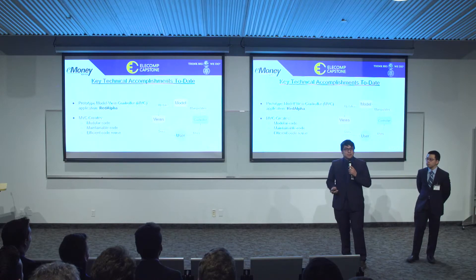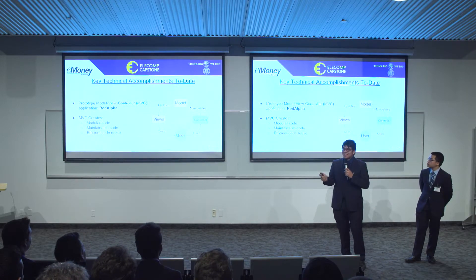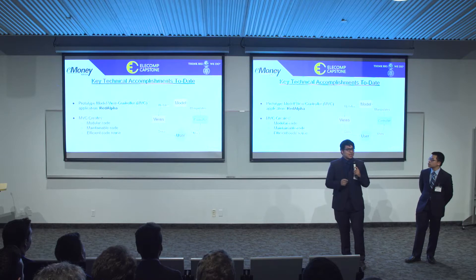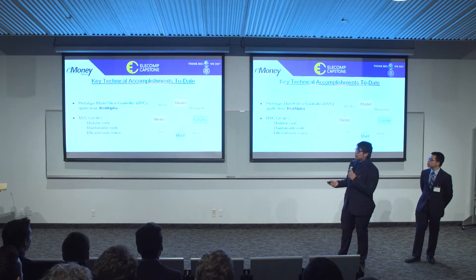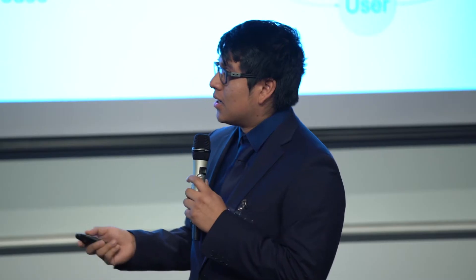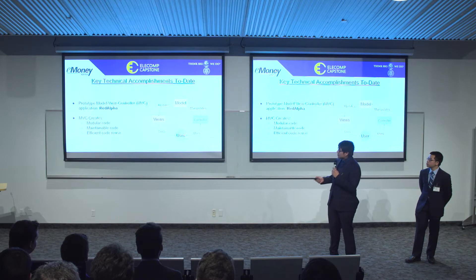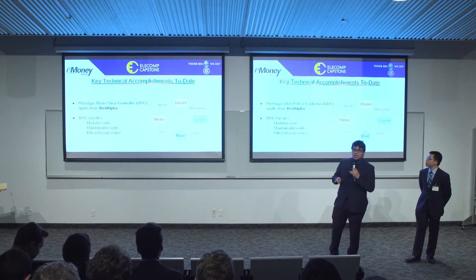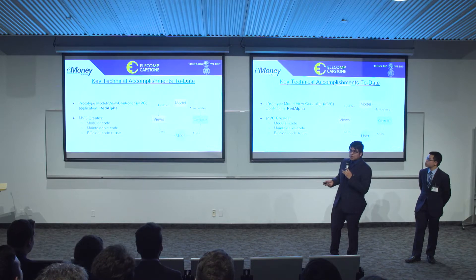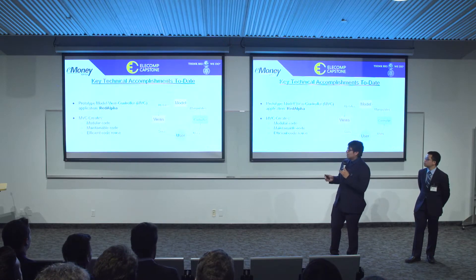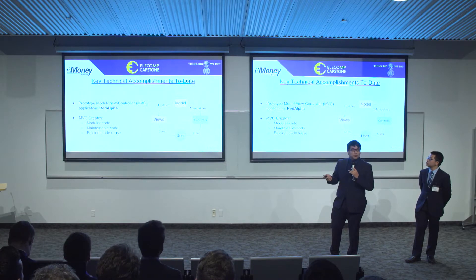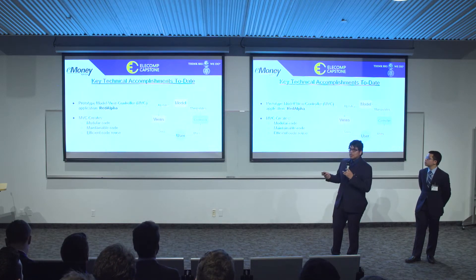Our key technical accomplishments to date are that we have worked to create our prototype model-view-controller web application. We codenamed it Red Alpha. The model-view-controller, or MVC, architectural pattern separates the web application into three components: the model, the view, and the controller. The view is what the user sees. The model holds all of the data logic that will essentially update the view. And then the controller manipulates the data with the model and interacts with the view in order to create a final output.